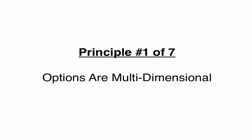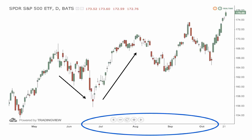Principle number one of seven, options are multidimensional. Kirk, what does that even mean, multidimensional? Well, let's take a look at a stock trade. So stocks, like we talked about in video one, are only two-dimensional, meaning that you can only make money basically in two different ways, ignoring dividends for a minute here.